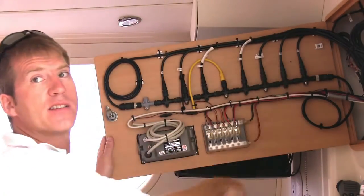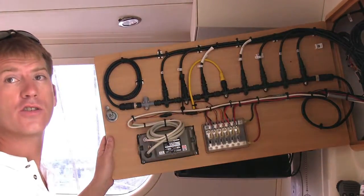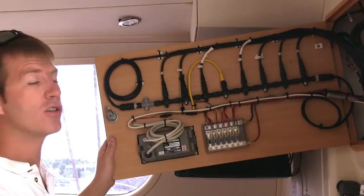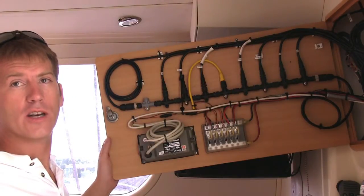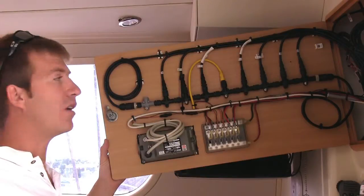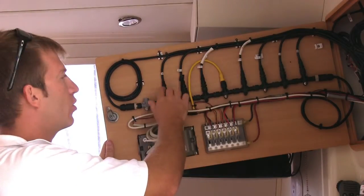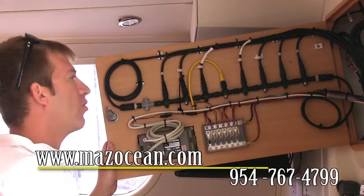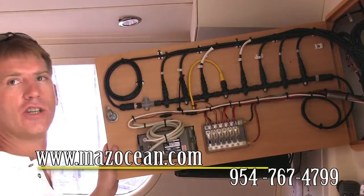On the other side runs down to your smart transducer which is the DST 800. It's a speed temperature and depth transducer. So on one end of your backbone you've got your depth and the other end you've got your wind and the rest of this makes up your chart plotter, your GMIs, your autopilots, your XM weather and your GPS.